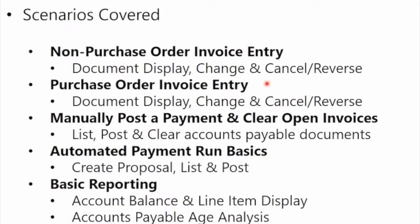We will also demonstrate the three-way match principle, where we have a purchase order, a goods receipt, and then show you how to process the invoice. For purchase order invoices, we'll cover how to display them. You can't change the purchase order invoice itself, but there are some changes you can make on the final sub-ledger accounting posting. You can always cancel and reverse a purchase order invoice document if needed.